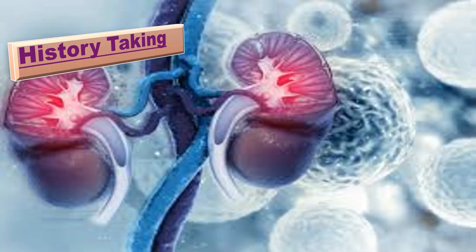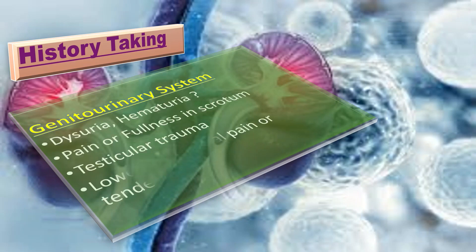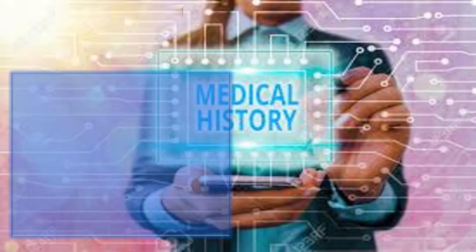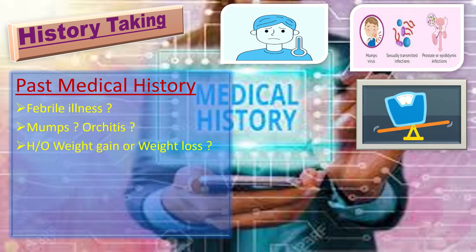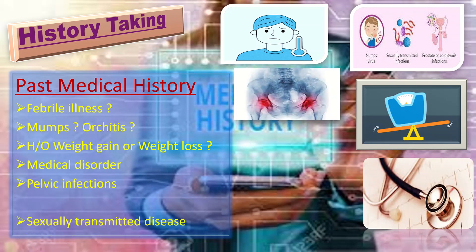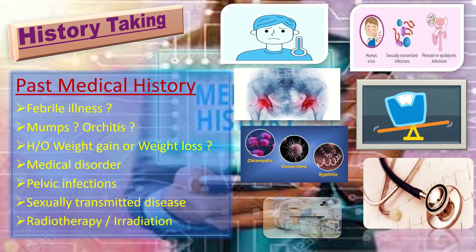For the genitourinary history, ask about dysuria, hematuria, pain or fullness in the scrotum, testicular trauma, and lower abdominal pain or tenderness. In the past medical history, ask about febrile illness, mumps, orchitis, weight gain or loss, medical disorders like diabetes, COPD, TB, renal and hepatic insufficiency, pelvic infections, sexually transmitted diseases, and history of radiotherapy or irradiation.